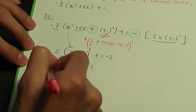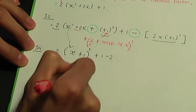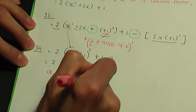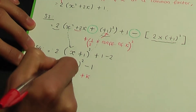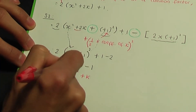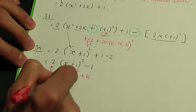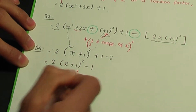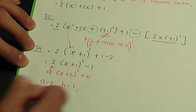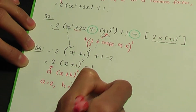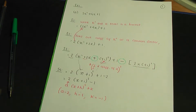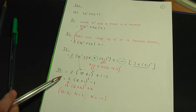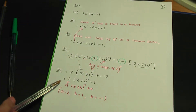Comparing with a(x+h)²+k, we note by comparison that a is 2, h is plus 1, and k is minus 1. So these are the steps for completing the square, and we'll see the same steps in action with the next example.